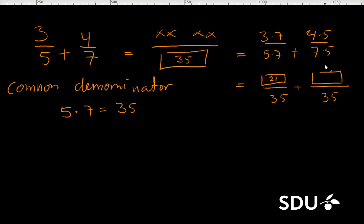So it would be 21, and 4 times 5 would be 20. And finally we can add this all up together, put it on a common fraction like this, and finally add the two numbers so we have our result down here.